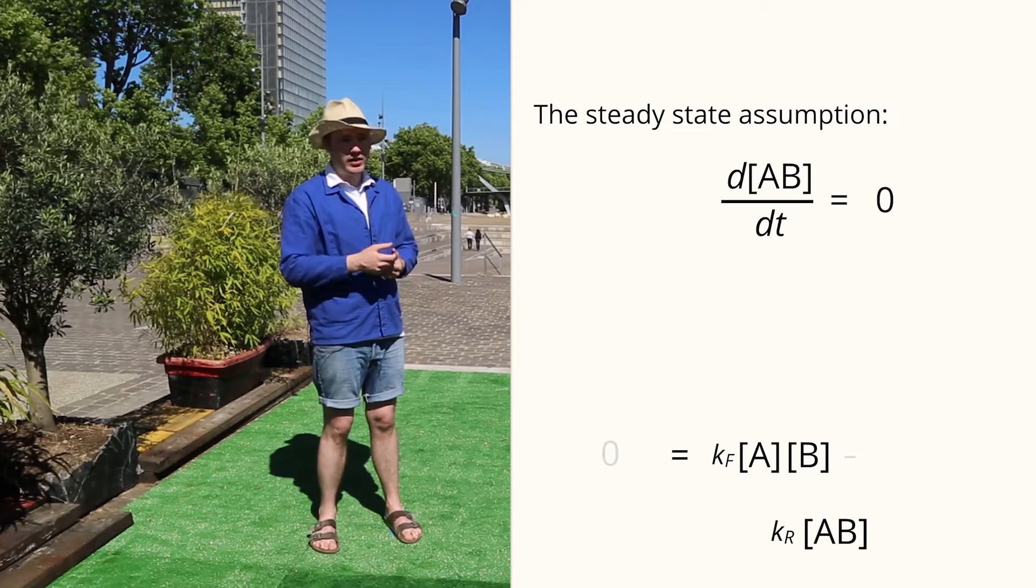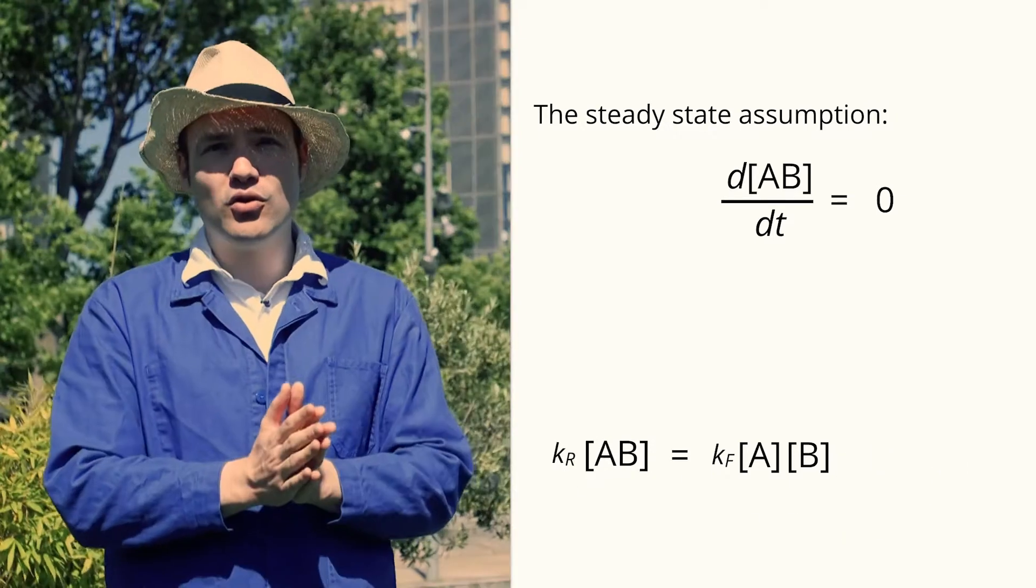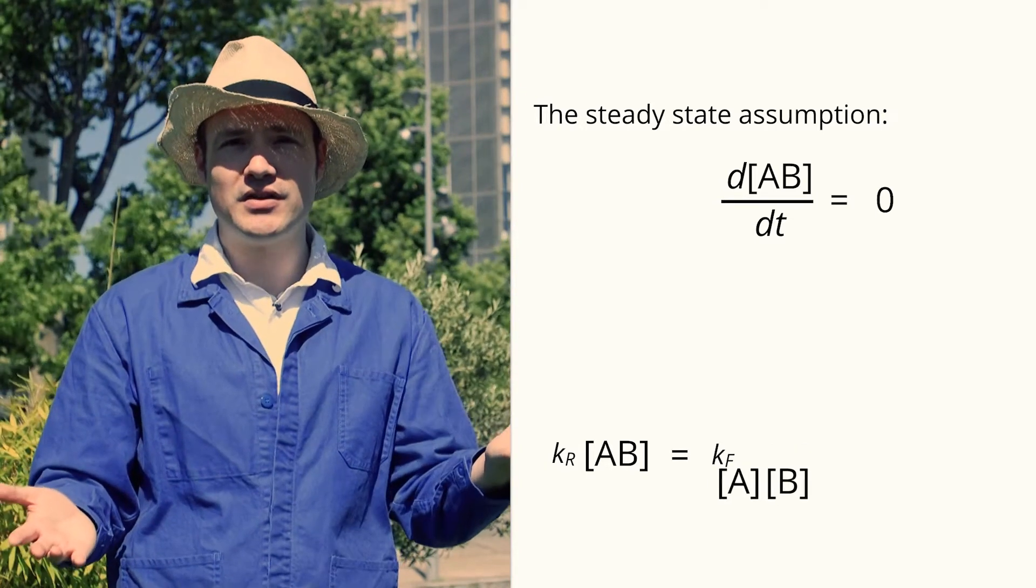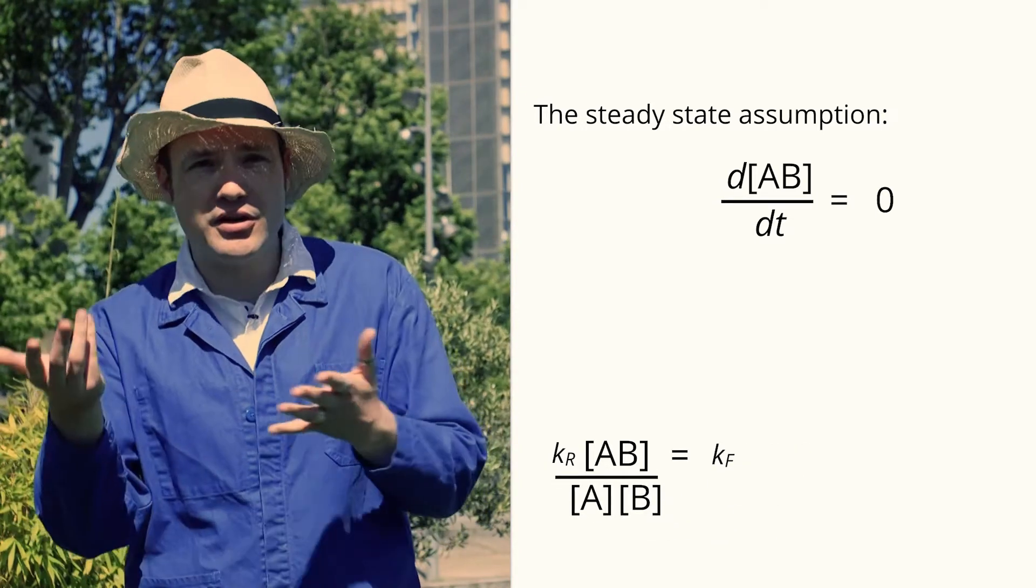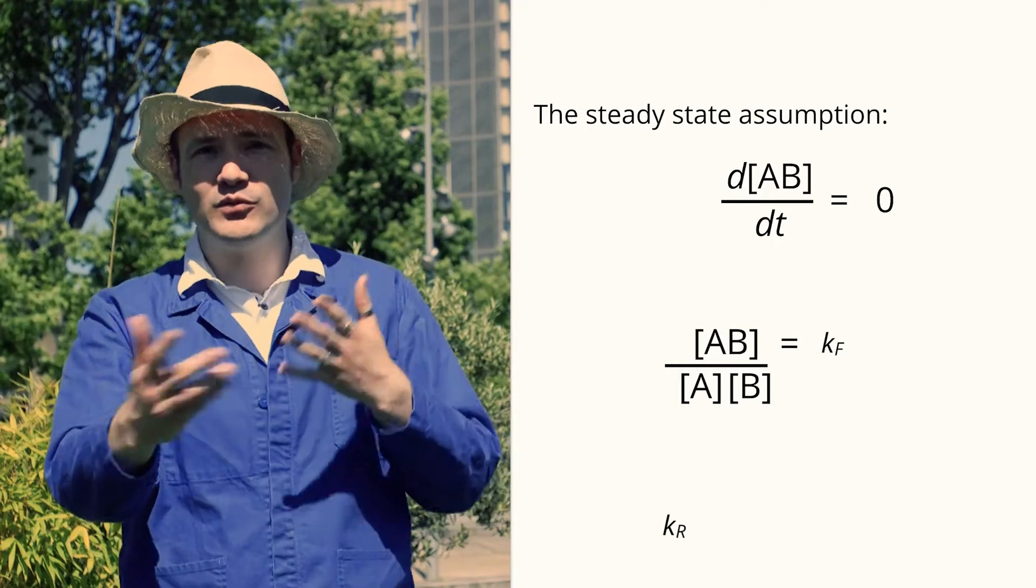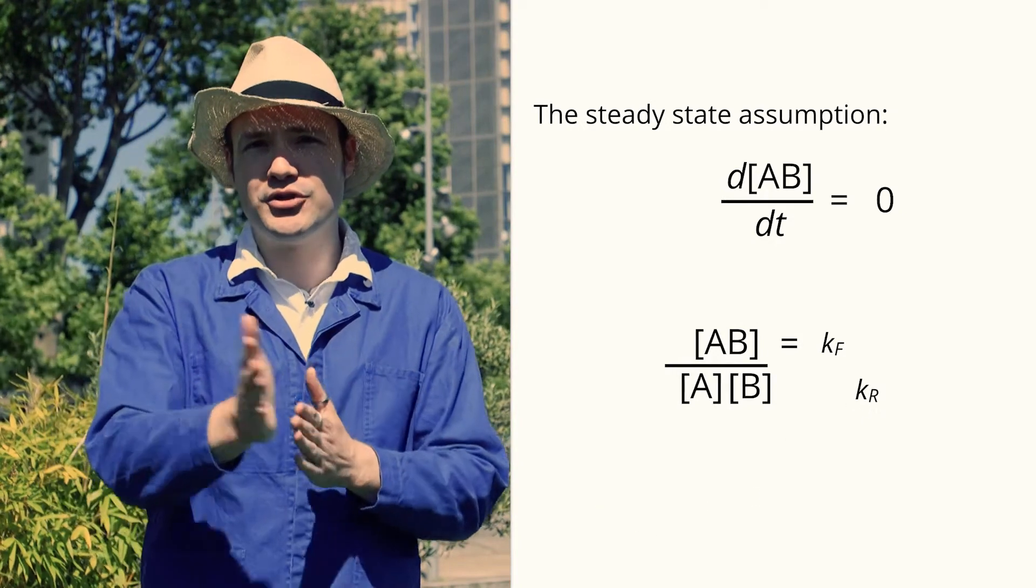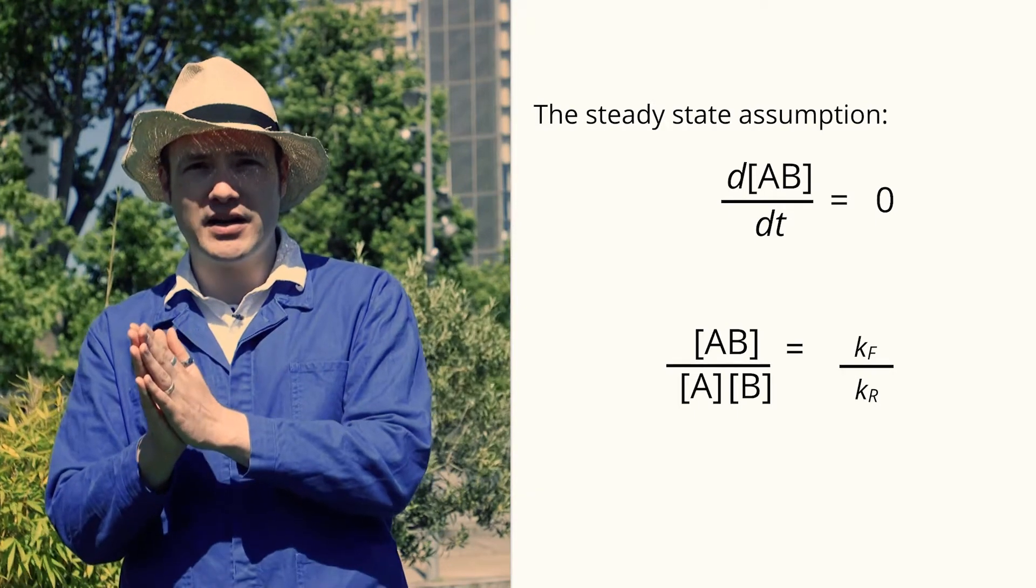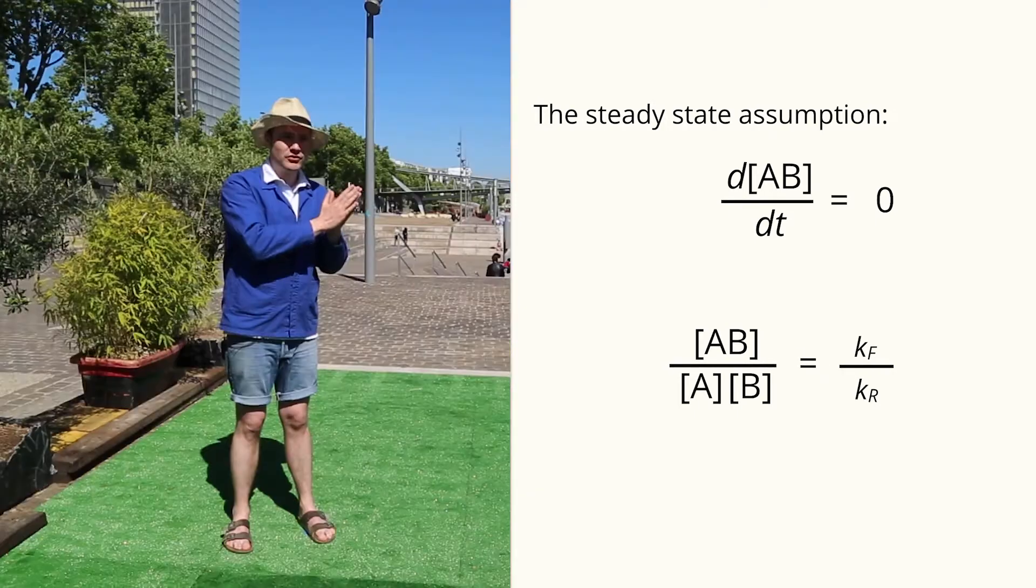So, let's do it. We want to know which state is more common, the complex AB or the individual subunits. So, we take this over here, we divide by that, we solve for the ratio. The ratio of the complex form to the individual subunits is equal to the forward rate constant divided by the reverse rate constant.